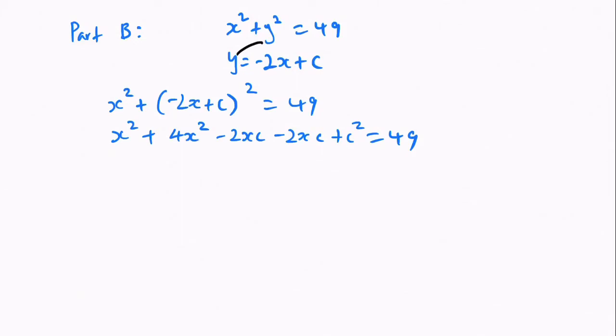Now we're going to combine like terms. 5x squared minus 4xc plus c squared equals 49. Move the 49 over, minus 49 equals 0.